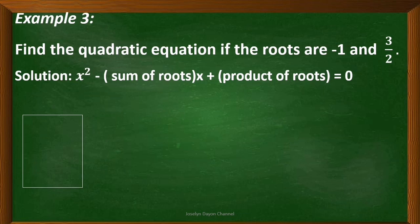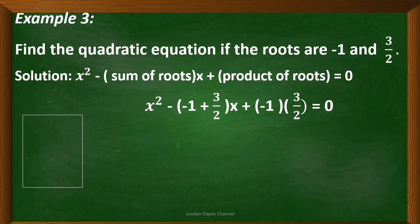Let's have the third example: find the quadratic equation if the roots are negative 1 and 3 halves. Same as the previous examples, write the general equation. Copy x squared, copy the minus sign, add the two roots: negative 1 plus 3 halves times x, plus multiply the two roots: negative 1 times 3 halves equals 0.